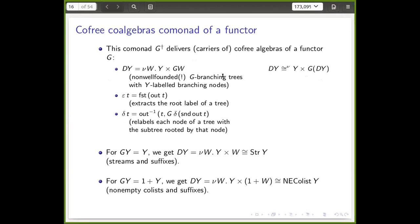There is no explicit leaf option — instead, every branching node is labeled with a state. The simplest case is when the functor is identity, because then we are after the greatest fixed point of DY equals Y times DY, and the solution is streams of Y: a stream over Y has as head an element of Y and as tail something that is again a stream. That's the co-free co-monad on the identity functor.